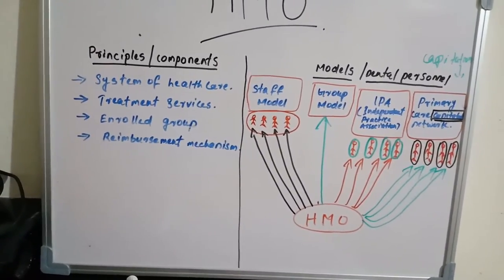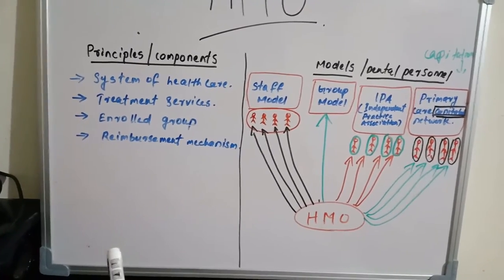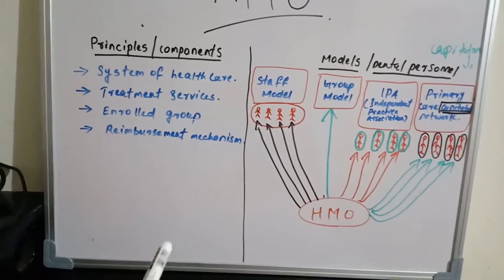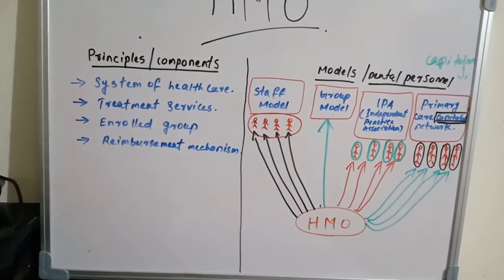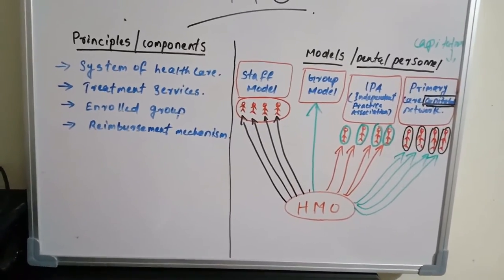Then there will be an enrolled group, that is the people who enrolled in this health maintenance organization, just like any other models like Delta dental plan or Blue Cross or Blue Shield. And the last mechanism is reimbursement, so how the providers are paid.